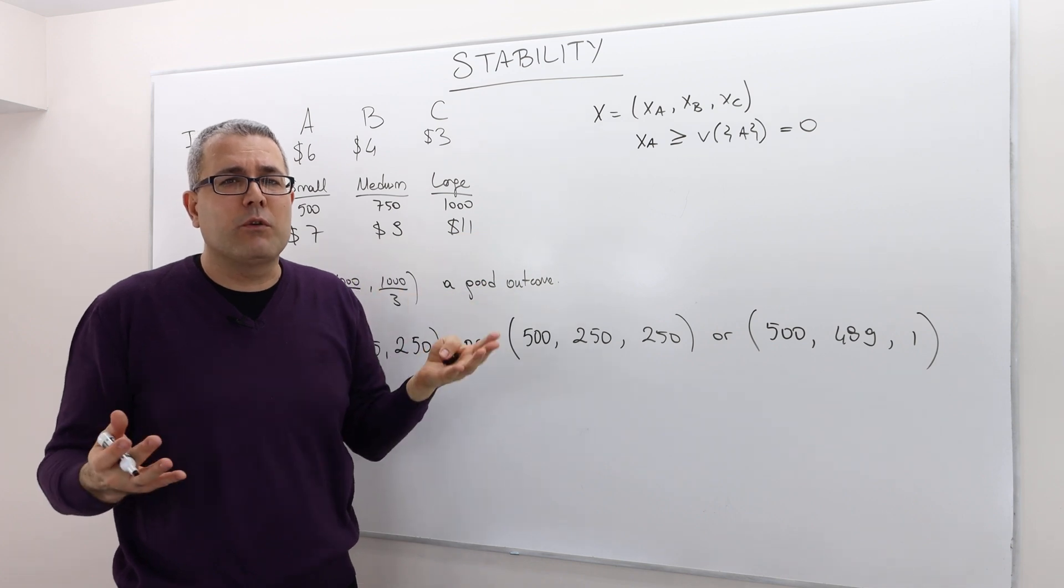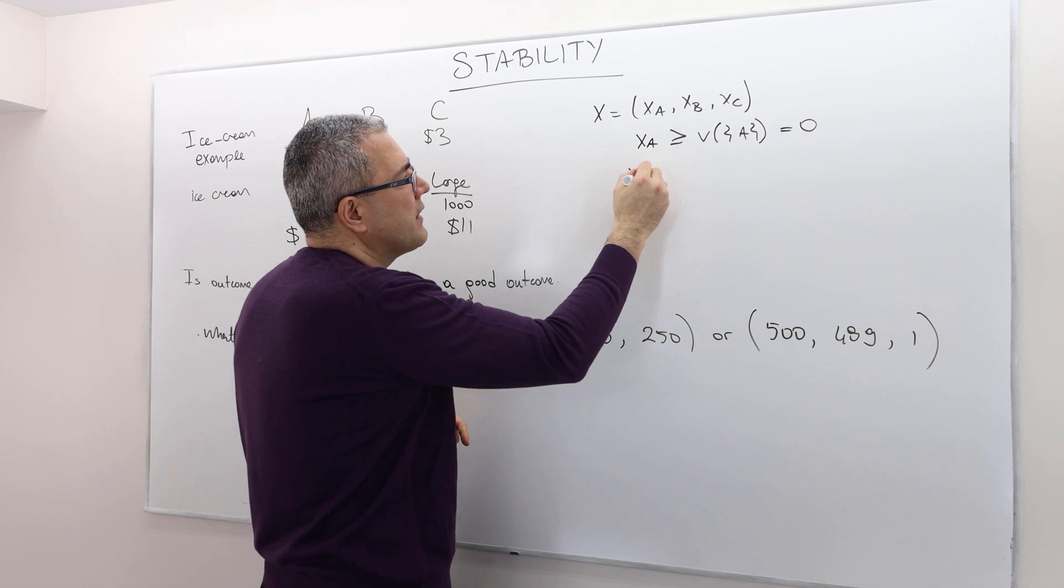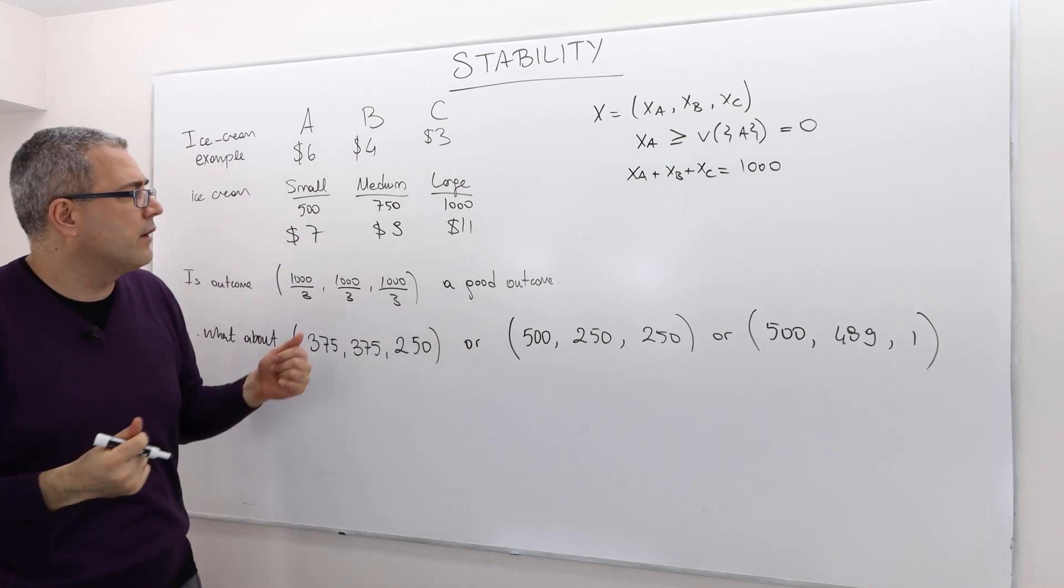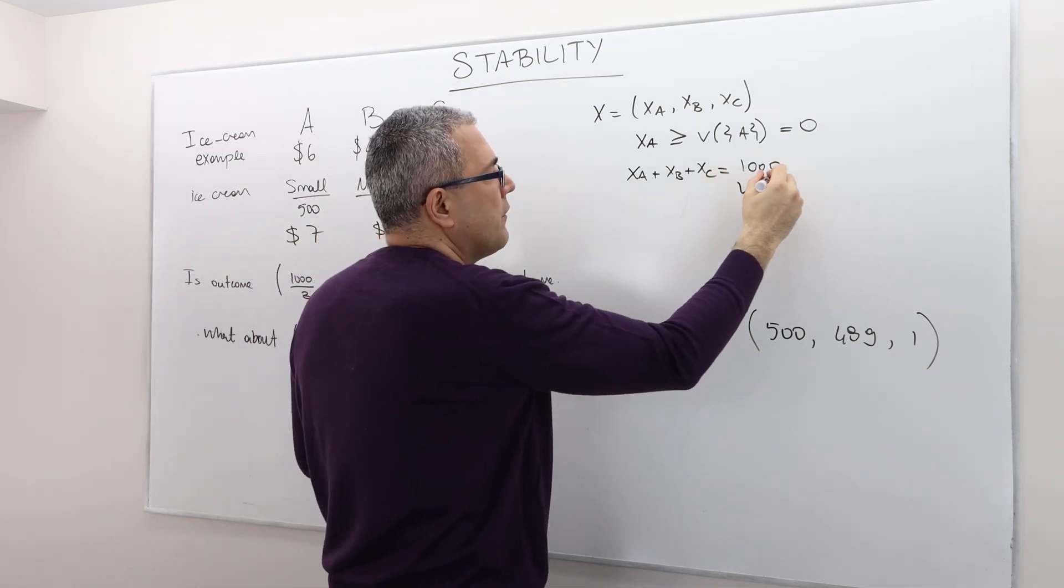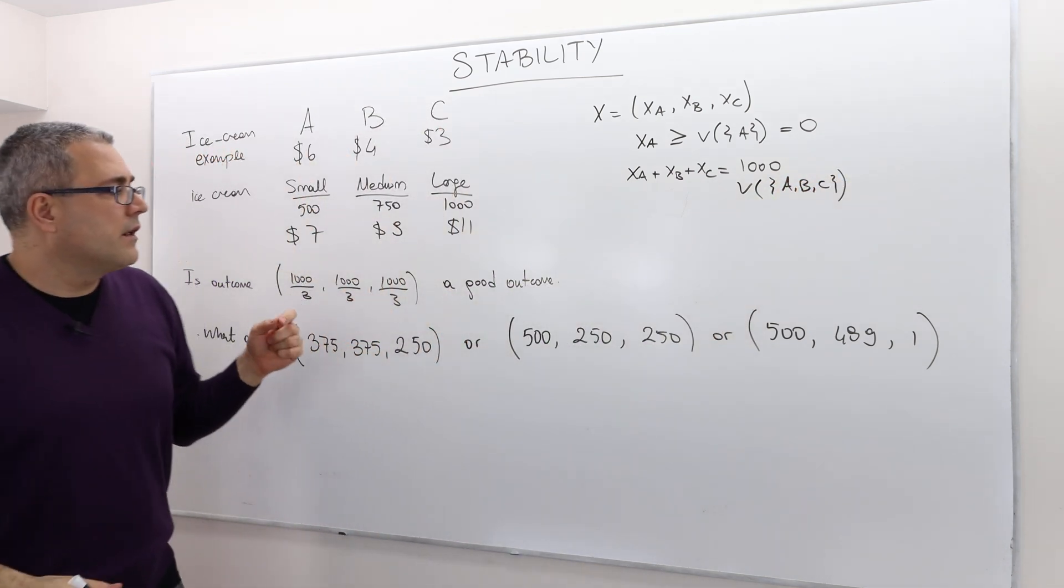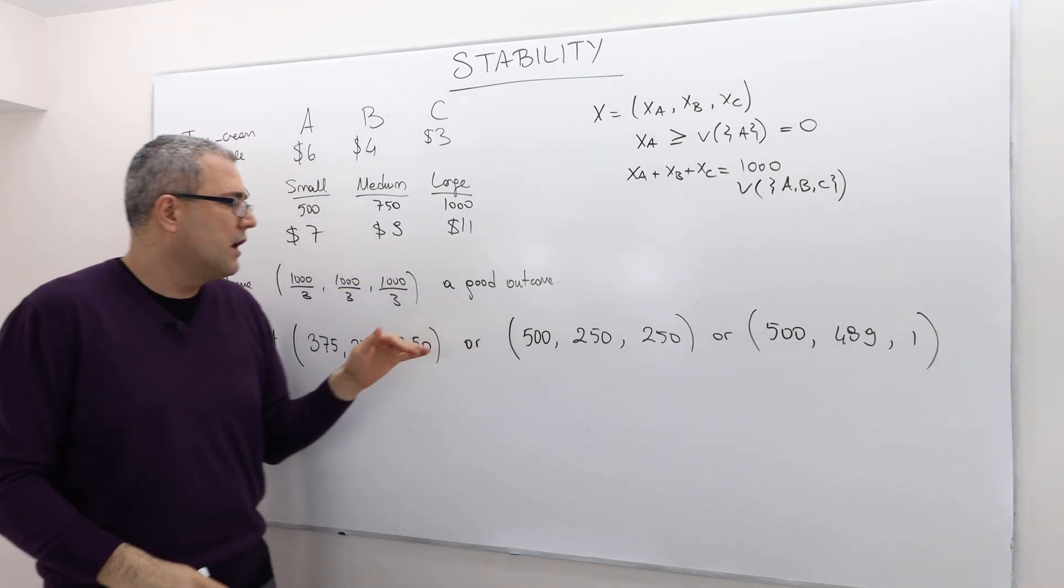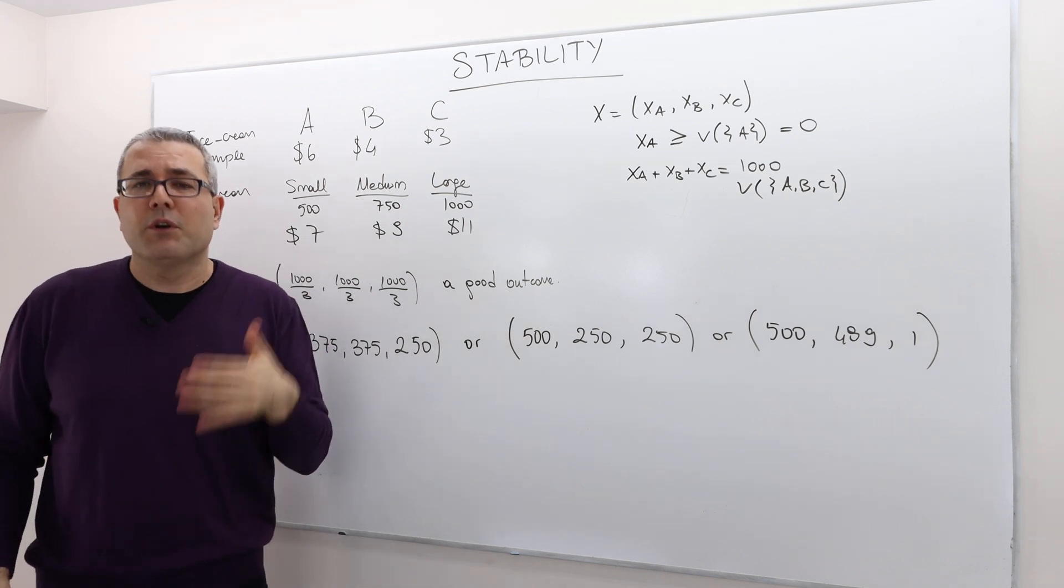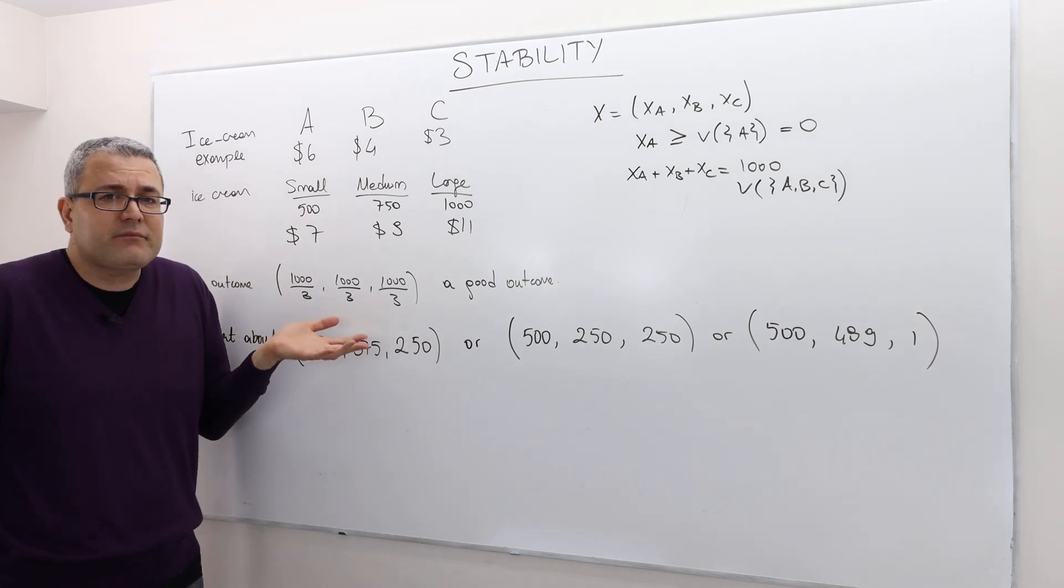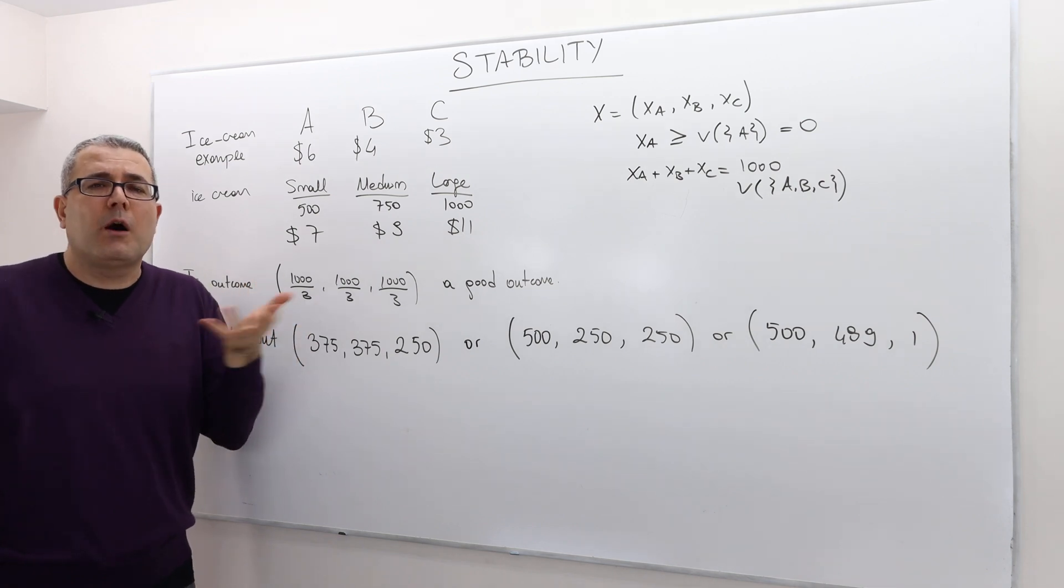And so remember, the individual rationality means this should be greater than V of A, which is, as we know, 0 because his money is not enough to buy any ice cream. Same is true for agent B and player C. So therefore, as long as they are non-negative, the payoff vector is going to be satisfying individual rationality. And then finally, XA plus XB plus XC must be equal to 1000, which is the total amount of the value of the grand coalition A, B and C. So therefore, if you check, I have some candidates as potential good outcomes. All of those are potential outcomes. There are, in fact, infinitely many outcomes. Well, the question is, if these three kids play this game, what would be the optimal outcome?